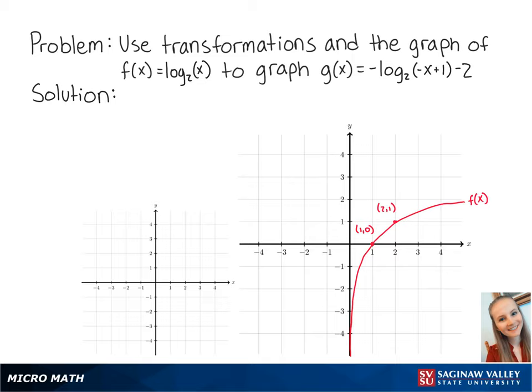For this problem, we want to use transformations and the graph of f of x equals the log base 2 of x to graph g of x equals the negative log base 2 of negative x plus 1 minus 2. We can rewrite this as g of x equals negative f of negative x minus 1 minus 2.